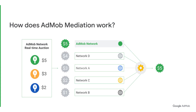In this example, the AdMob network had a $5 bid for the request. The other waterfall-based networks had eCPM values lower than $5, so the AdMob network's ad was selected to show in the app. For the next impression, let's say the AdMob network bids $2.50. In this case, network D has the highest eCPM value of $4, so that network would be called in the mediation waterfall first. If network D fills, then network D will serve the impression. If network D does not fill, then network A would be called next. If network A does not fill, then the AdMob network would be called next, and the AdMob network ad would serve.